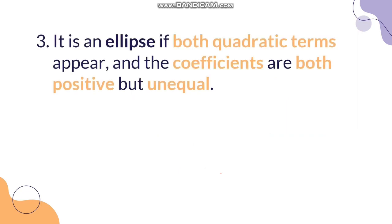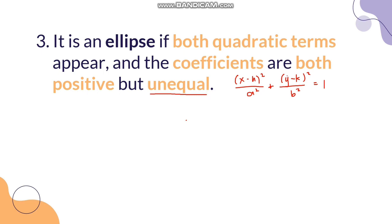For ellipse, it is an ellipse if both quadratic terms appear and the coefficients are both positive but unequal. In the standard form (X−H)²/A² + (Y−K)²/B² = 1, both X and Y are squared and the operation is addition, so both coefficients are positive. However, because of the two different denominators A² and B², the coefficients are unequal.